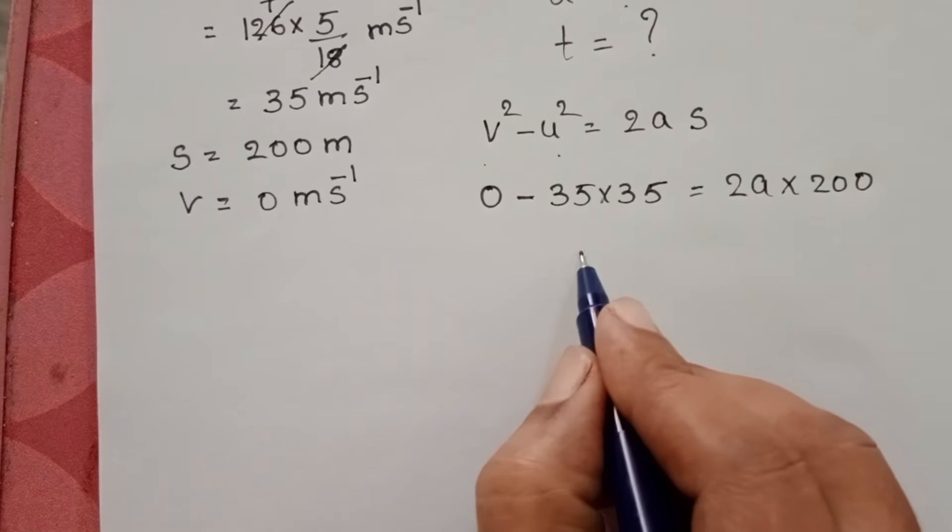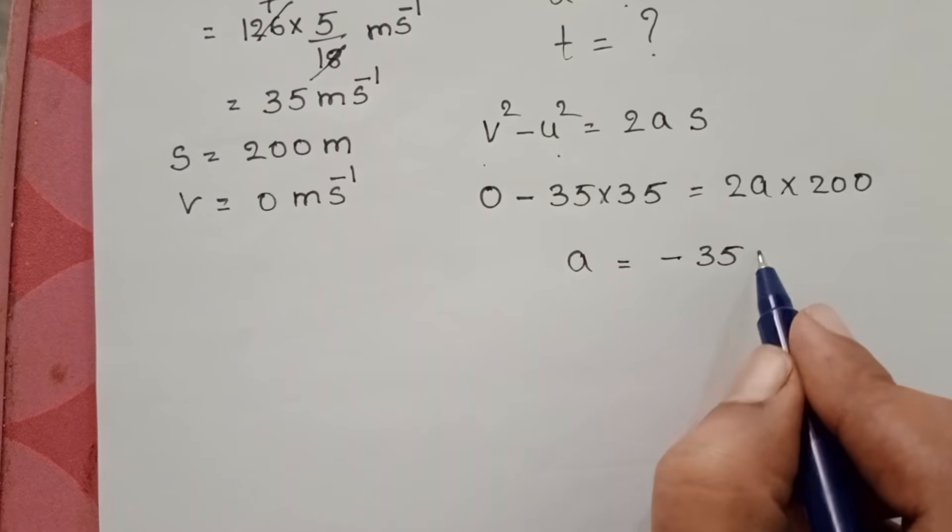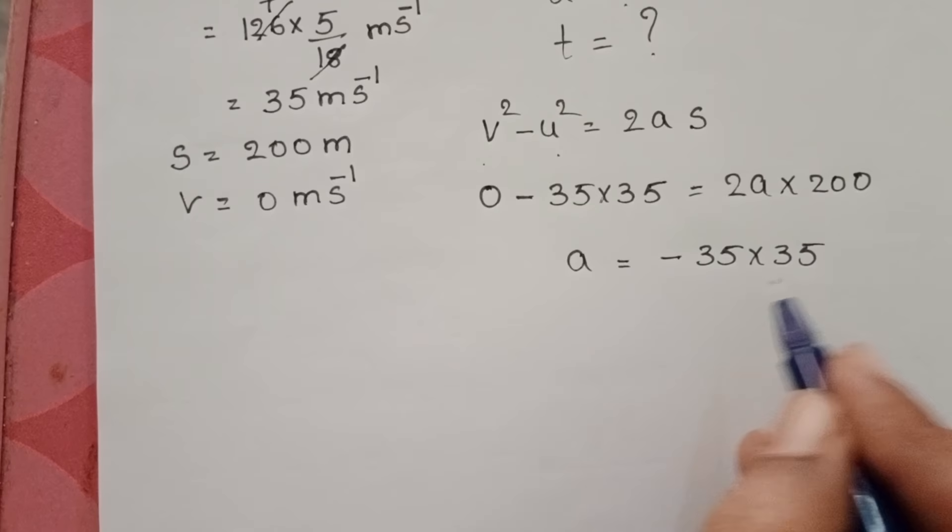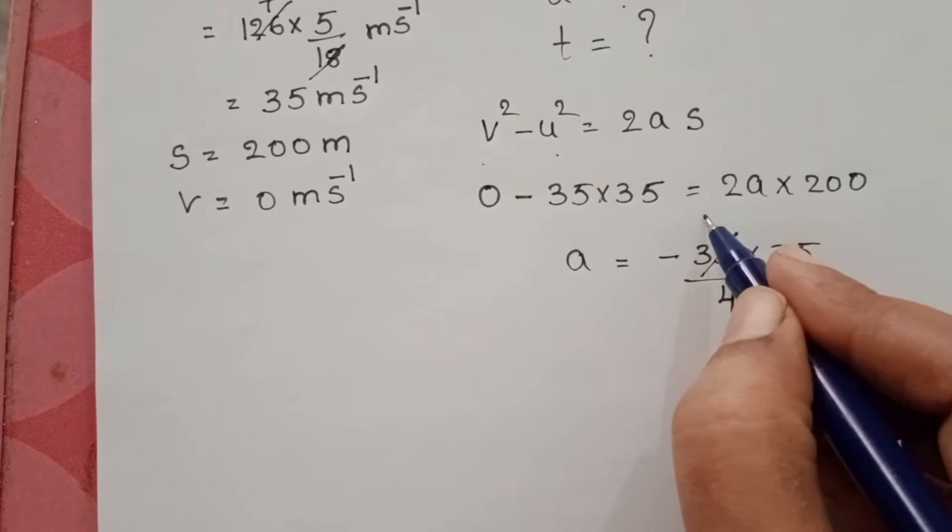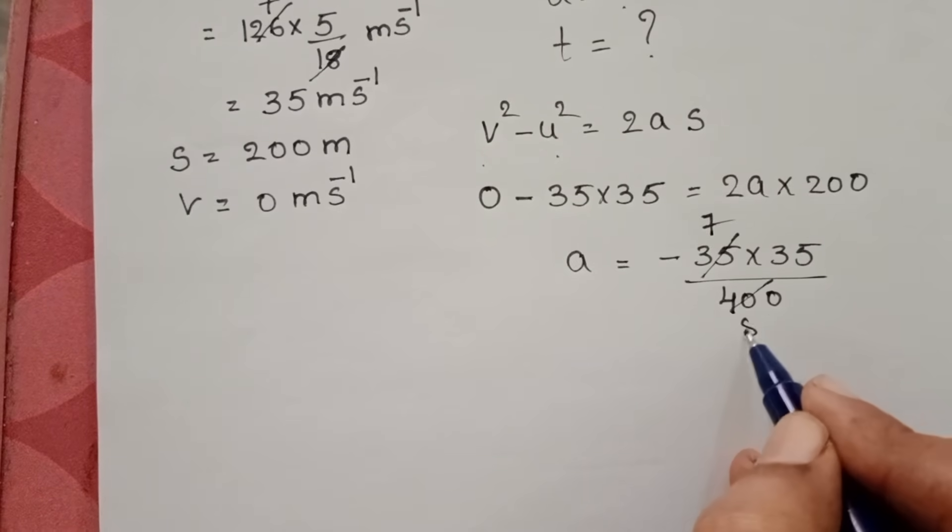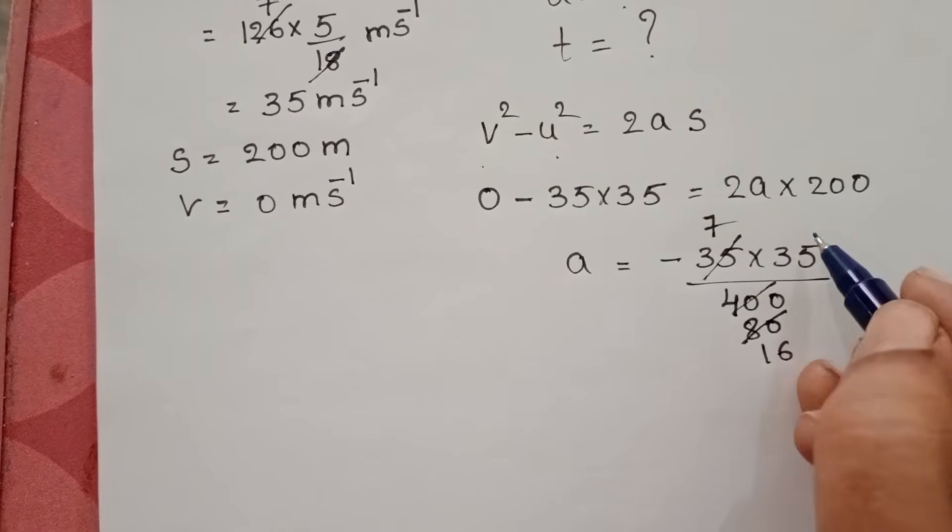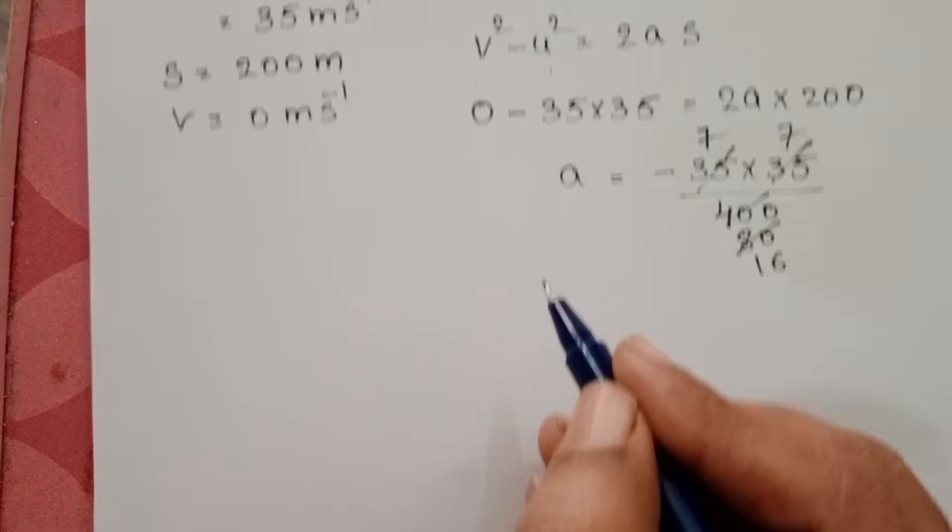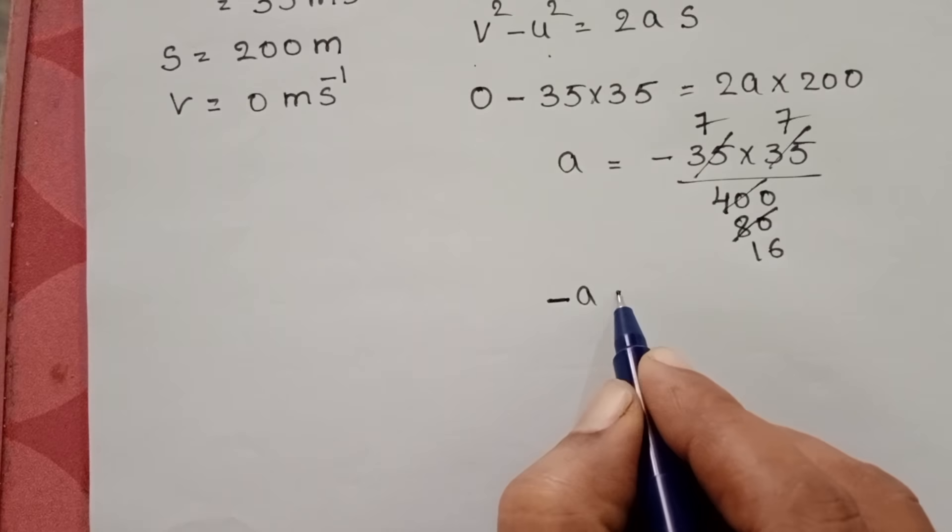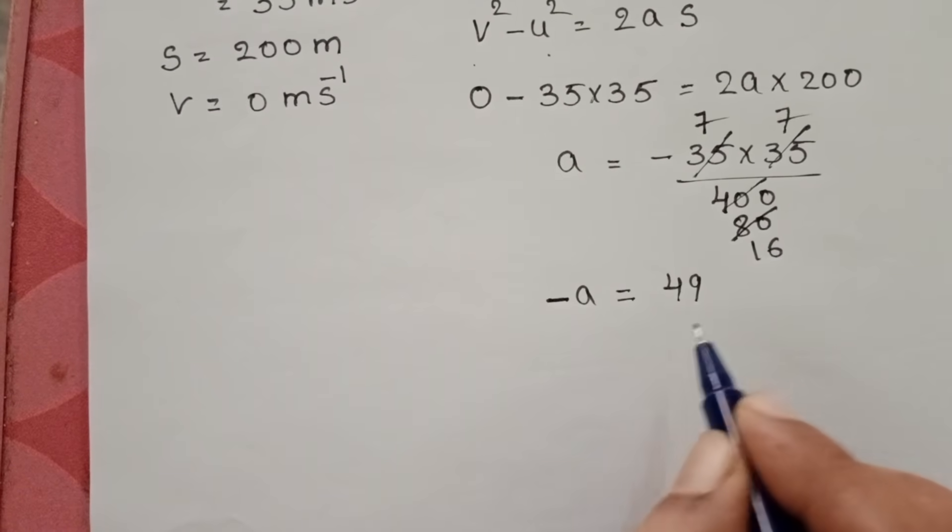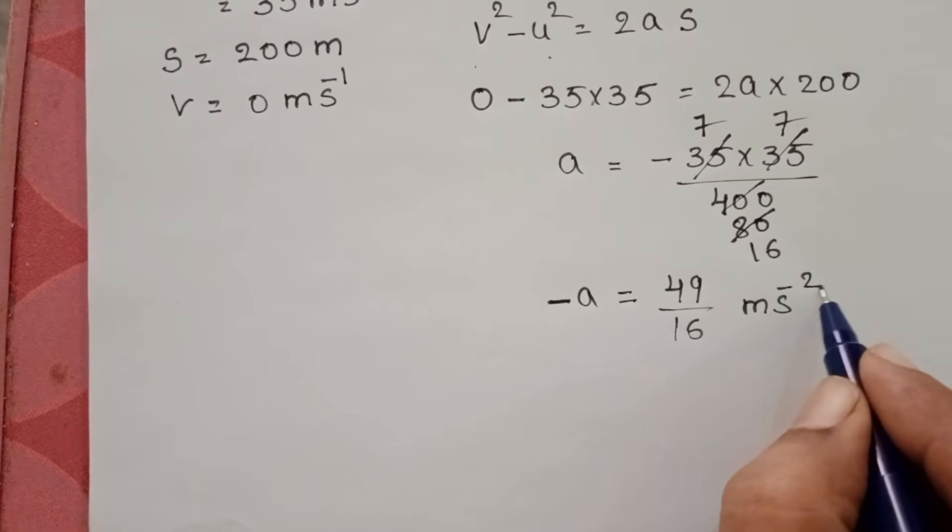From this, acceleration equals minus 35 times 35 by 400. Cancel with 5: 5 sevens, 5 eighties. Again with 5: 5 sixteens, 5 sevens. Write this minus on the left-hand side. Minus A, that means retardation. Retardation equals 49 by 16 meter per second squared.